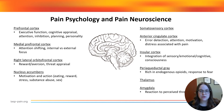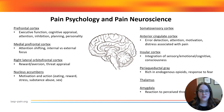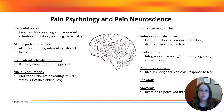The periaqueductal gray is associated with the descending modulation of pain and also response to threat. Relevant to pain modulation, it receives cortical projections largely from the anterior cingulate cortex and the prefrontal cortex. Of course, the thalamus does the hard work of connecting multiple brain regions and relaying messages to and from the body. It's not just a central station — it's involved in pain processing itself and receives projections from multiple pain pathways.